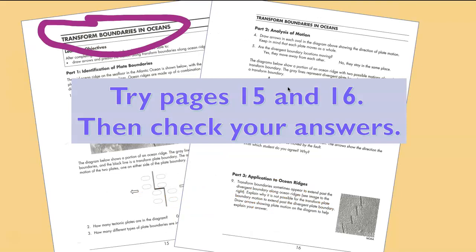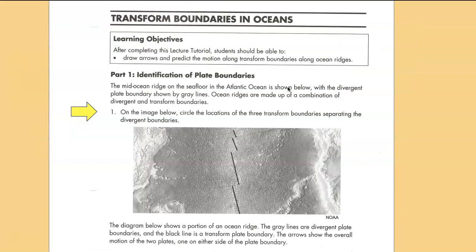Let's take a look at transform boundaries. In this particular case, we're going to look at transform boundaries in the ocean. So this would be pages 15 and 16. Go ahead and pause the video, try to answer the questions, and then come back to watch the answers. In this image, they ask you to circle the locations of the three transform boundaries separating the divergent boundaries. The divergent boundaries are these dark lines shown here. So I want to circle three transform regions with this white color here, here, and here. Those are areas where the divergent boundaries are offset and the motion is being accommodated by the transform boundaries.